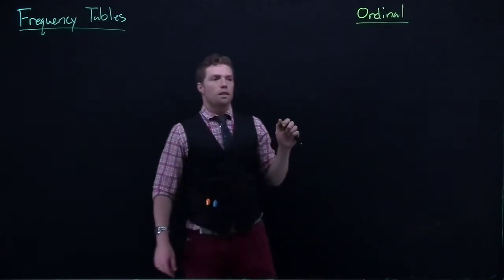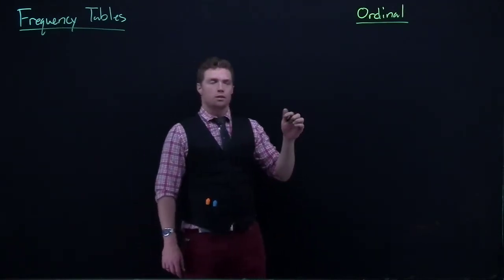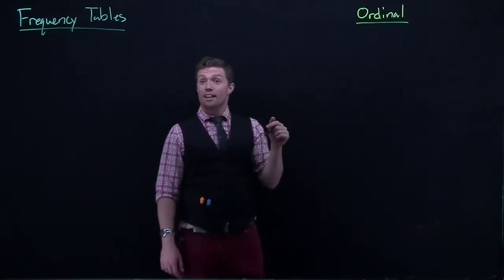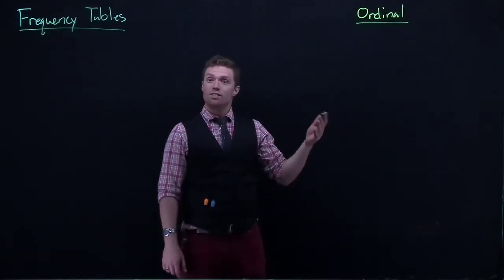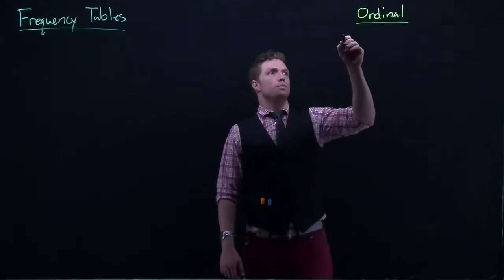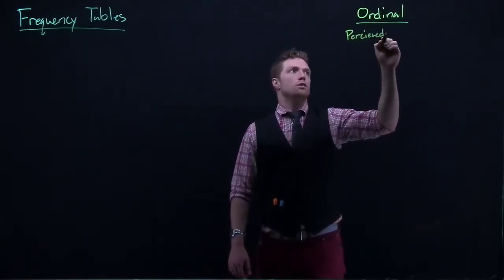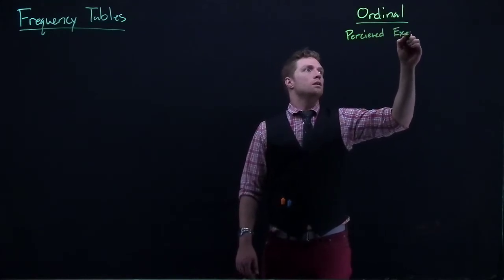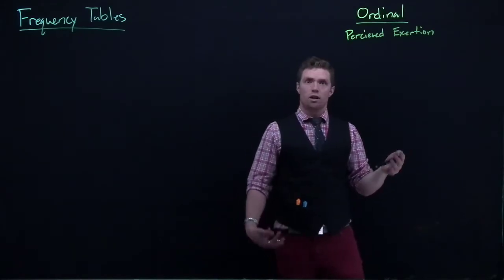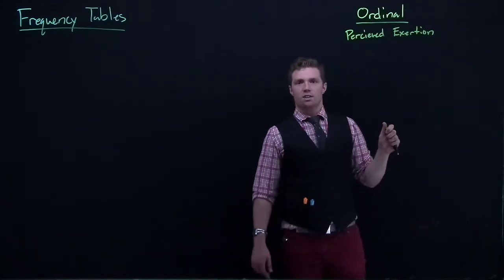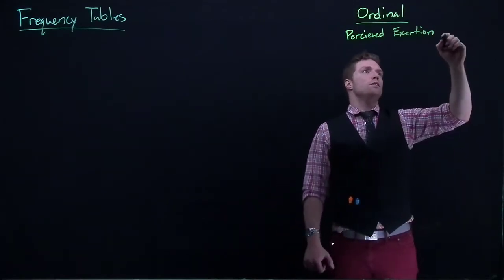This would be ordinal data. Let's continue with this basketball example. And let's say at the end of the game, we will say like his perceived exertion, we'll do like a Likert scale, and we'll do perceived exertion during the game. You know, if he played really hard, it would be like heavy, and if he was kind of loafing around, it would be light.